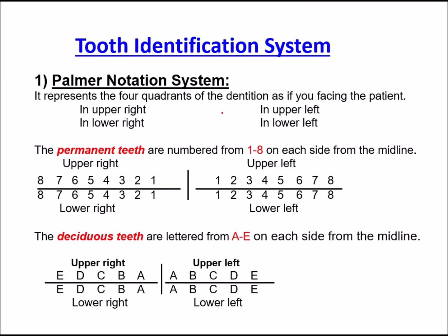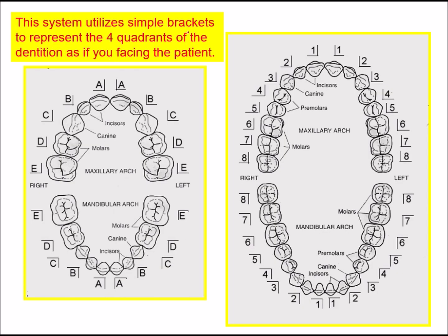Before the invention of tooth identification systems, representing teeth was very problematic. The Palmer notation system divides the jaw into four quadrants. For permanent teeth, numbering is 1 to 8; for deciduous teeth, lettering is A to E. The quadrants are upper right, upper left, lower right, and lower left, represented by a bracket symbol to indicate four quadrants — two for maxillary and two for mandibular.